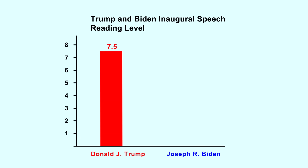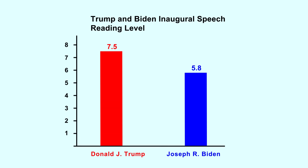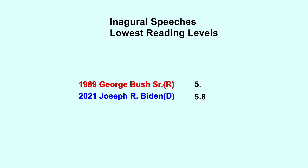Let's now take a look at the two presidents everyone came here to see. If we look at the reading level of Trump's inaugural speech versus Biden's, we see that Trump's reading level is actually a bit higher than Biden's. Trump spoke at a 7th grade reading level, while Biden spoke at a 5th grade reading level. Biden's speech is one of the lowest ever, along with George Bush Sr., a Republican, and LBJ, another Democrat. So again, both parties have had inaugural speeches with low reading levels.